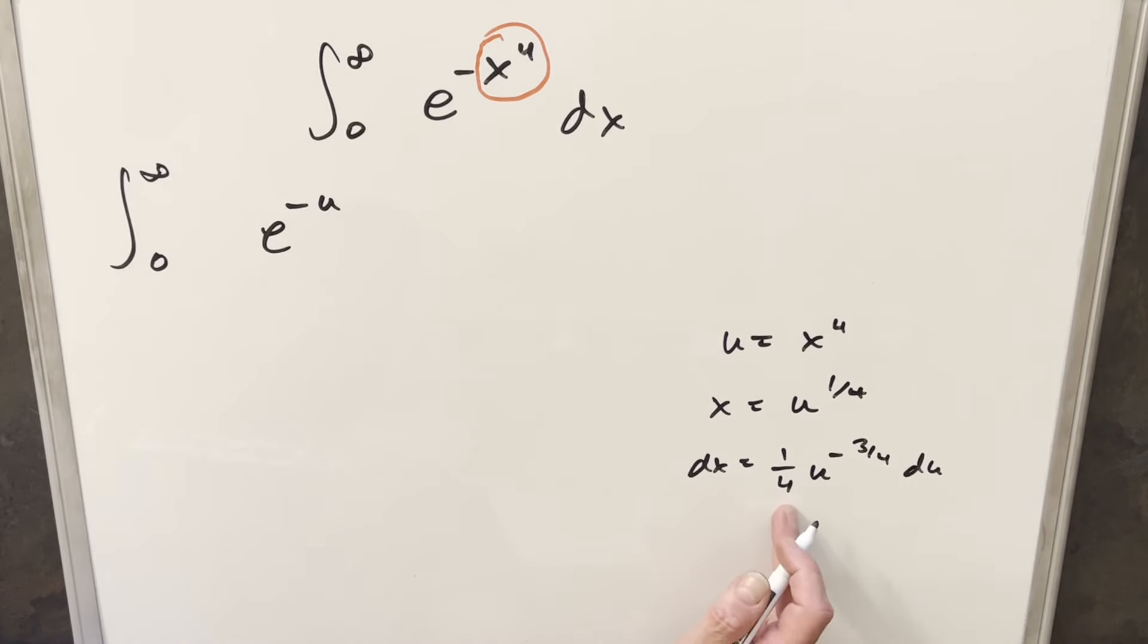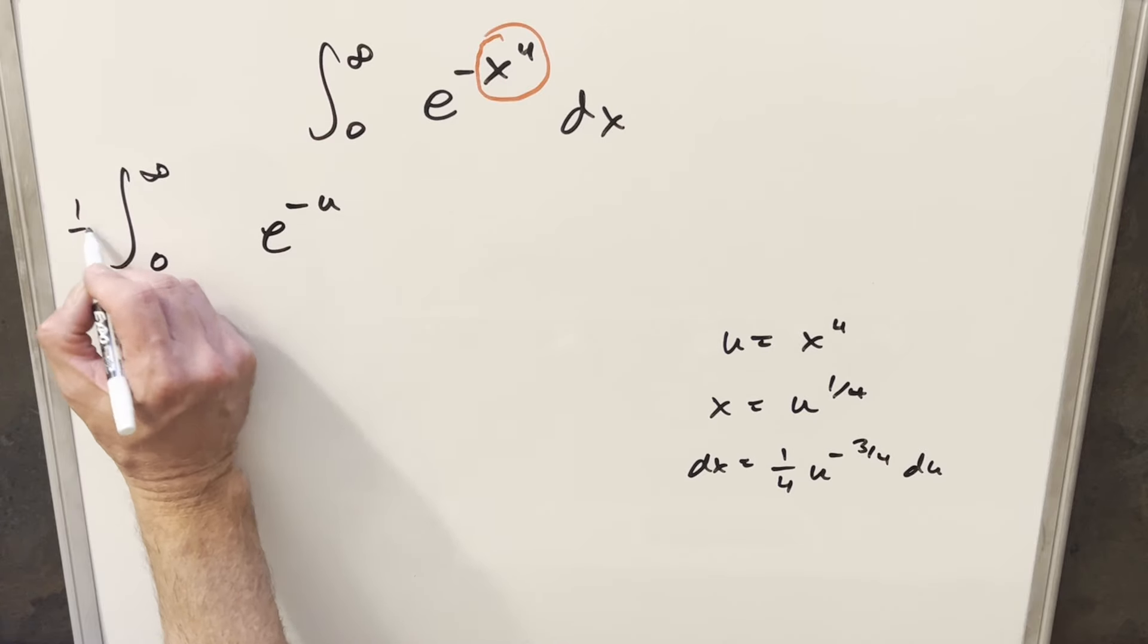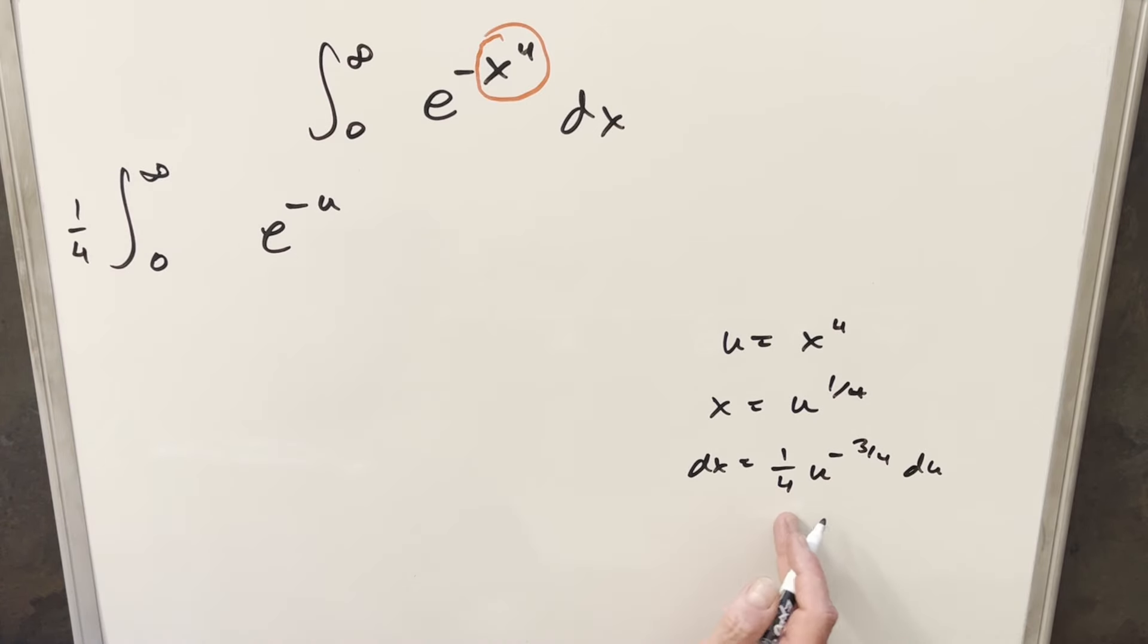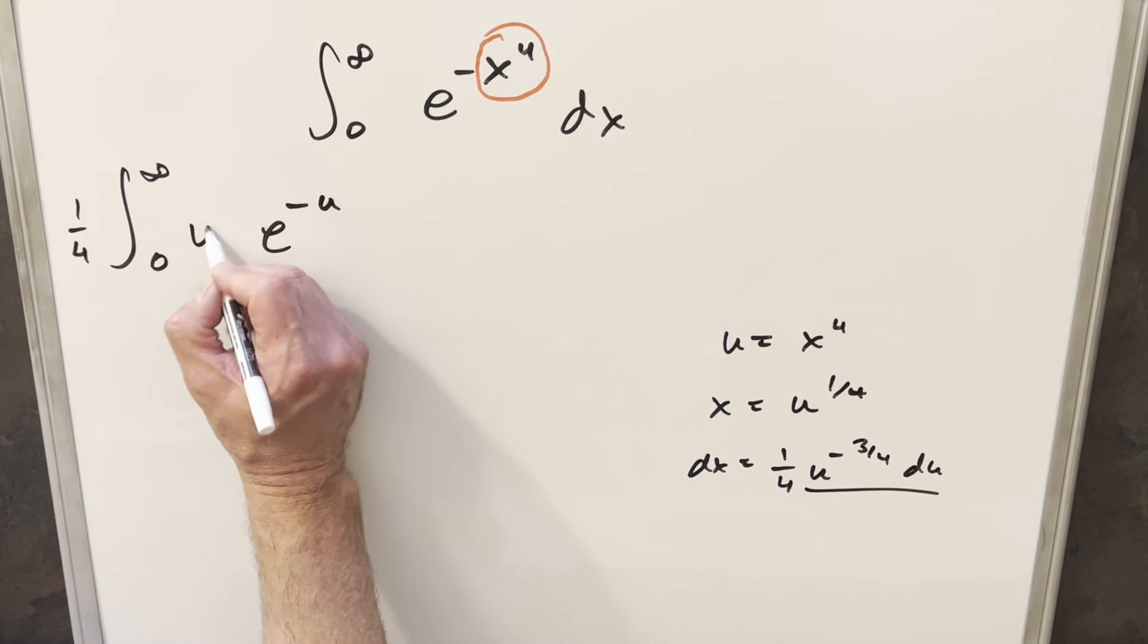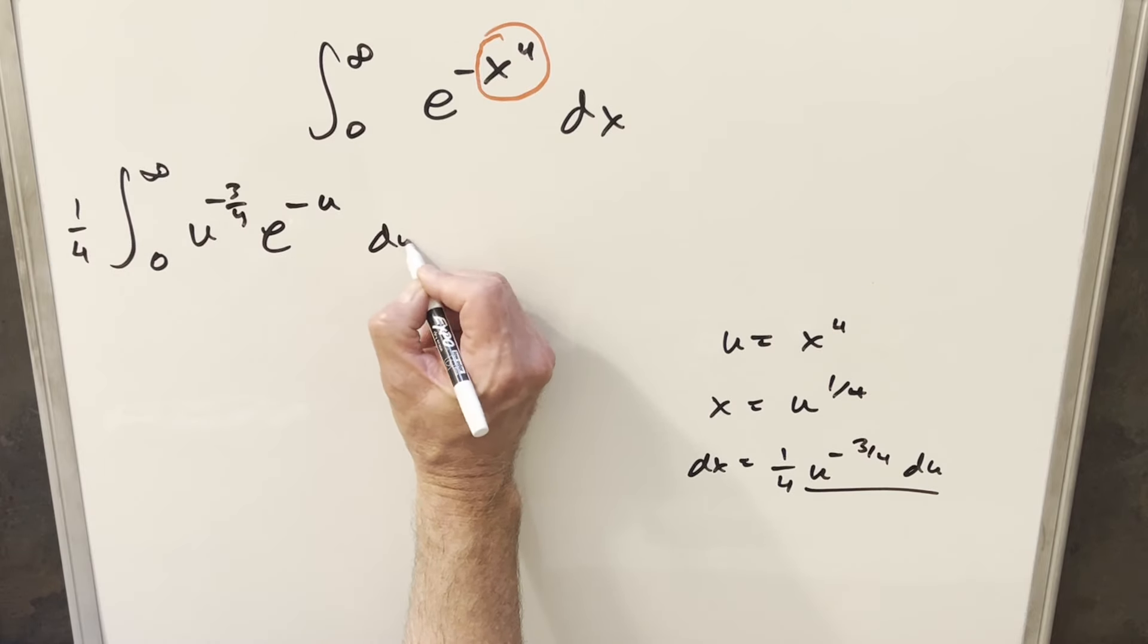And then for dx, I'm going to kind of go out of order. So for our dx value, we have this right here. I'll take the 1/4th and bring it up front. And then we'll have this other stuff. I'm going to write it like this, u to the minus 3 over 4 du.